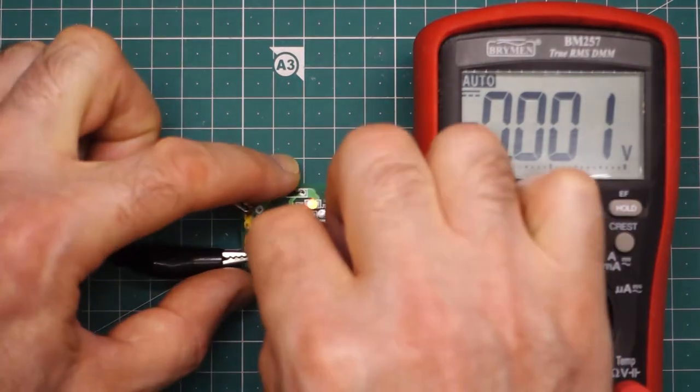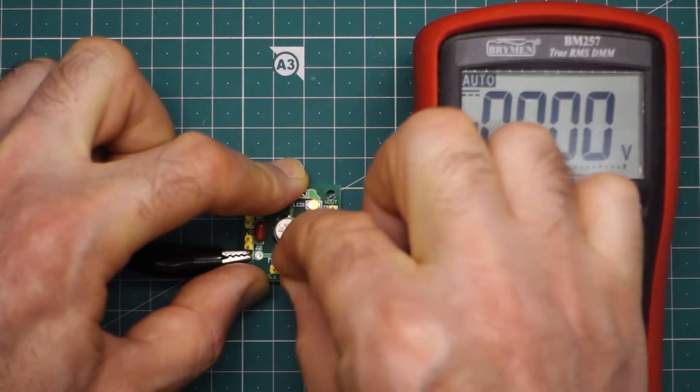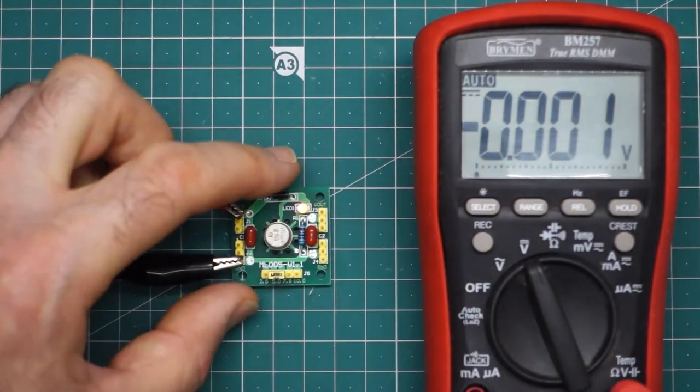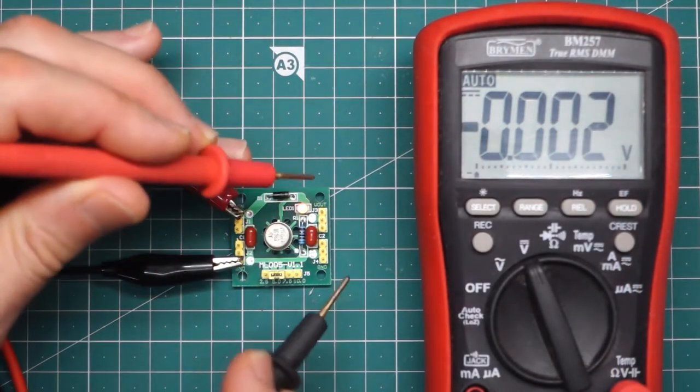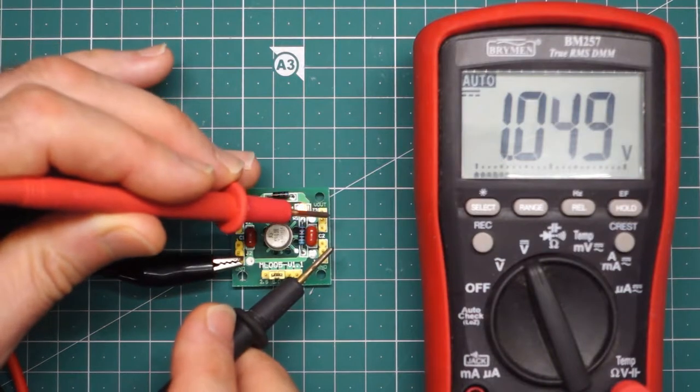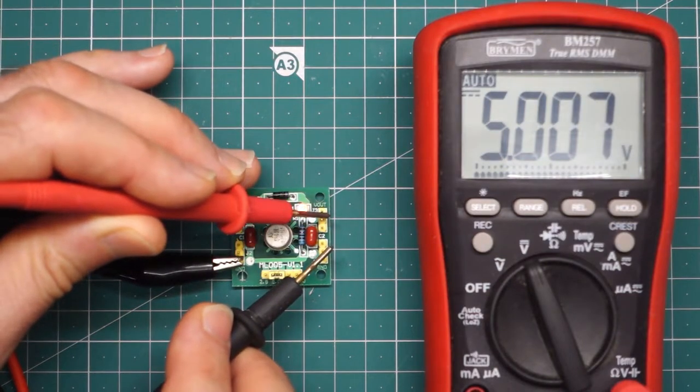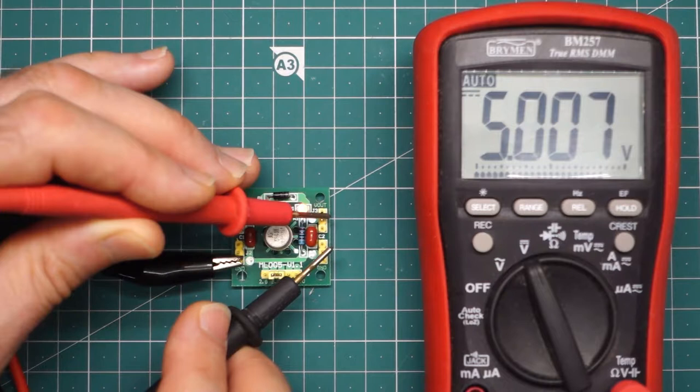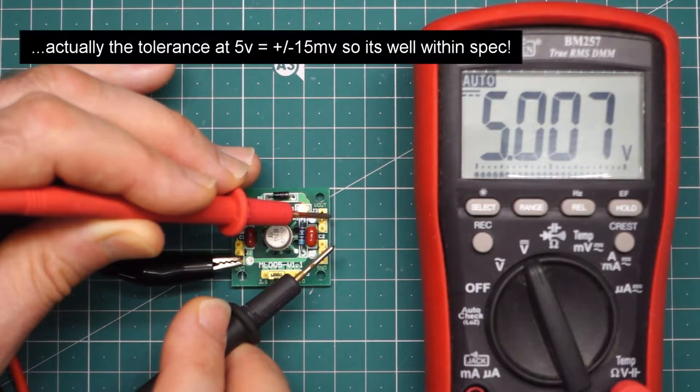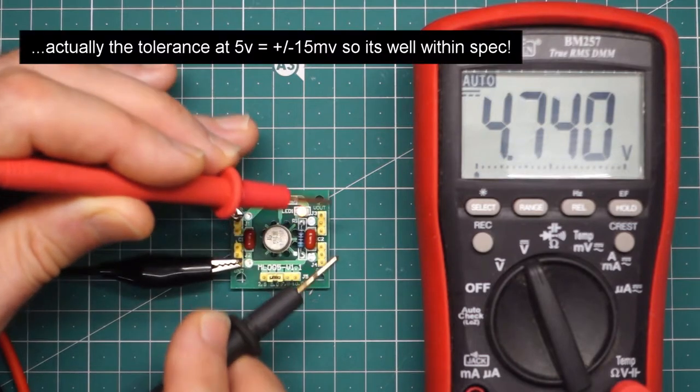Let's just move this up for shits and giggles. Up to 5 volts. 5.007. So that's 7 millivolts. That's actually quite close to the spec. But still within.